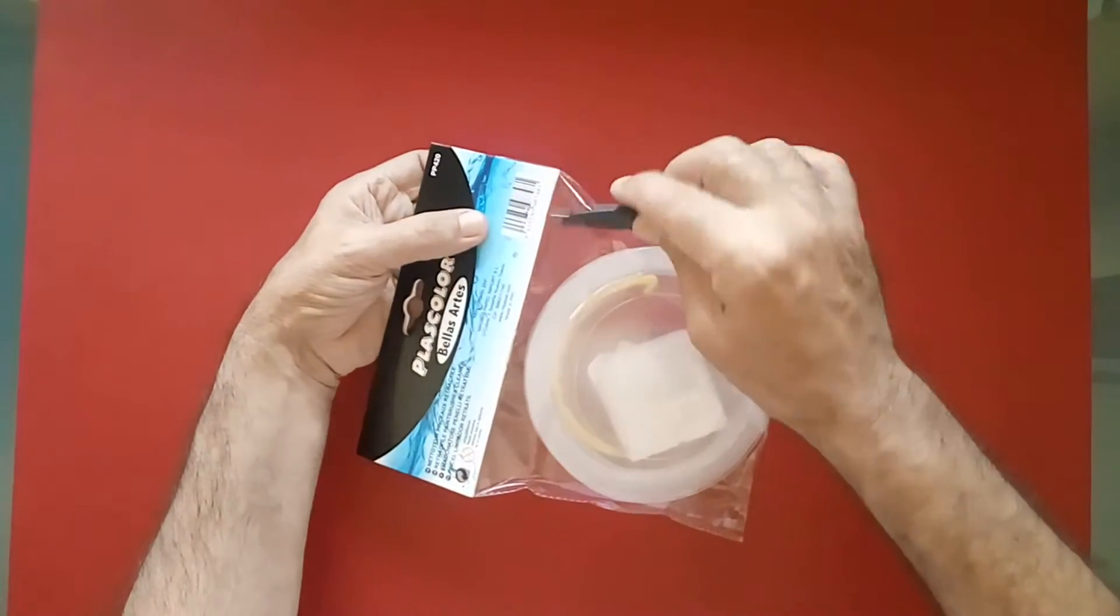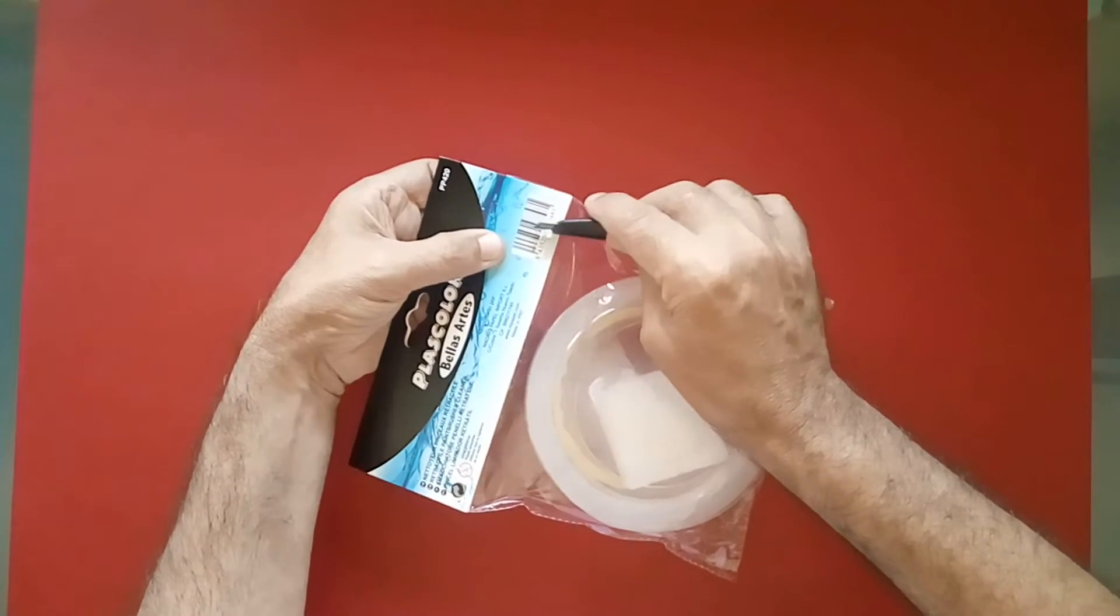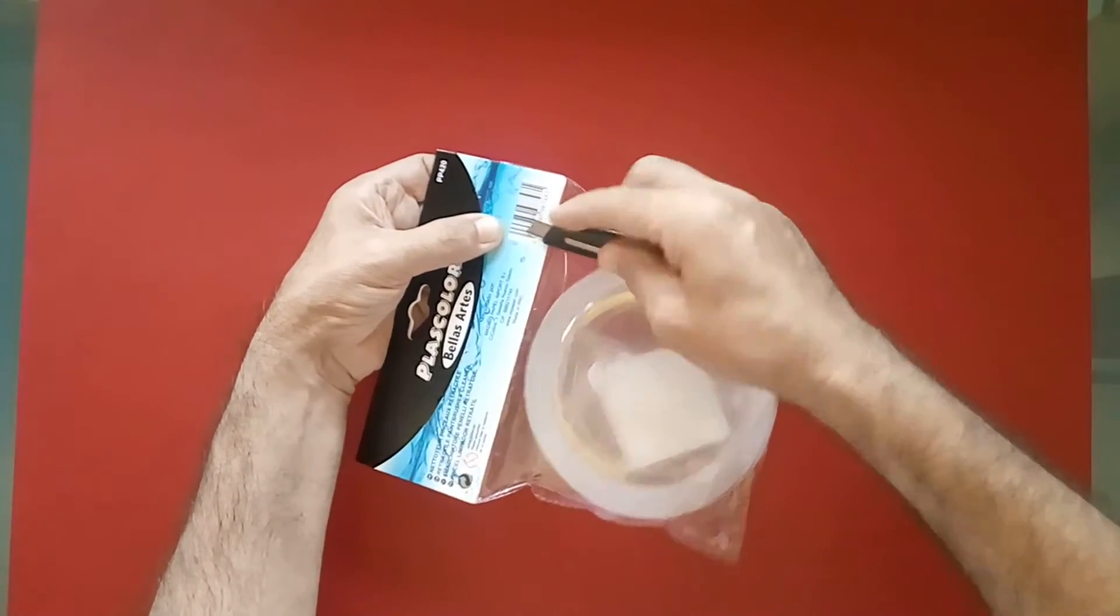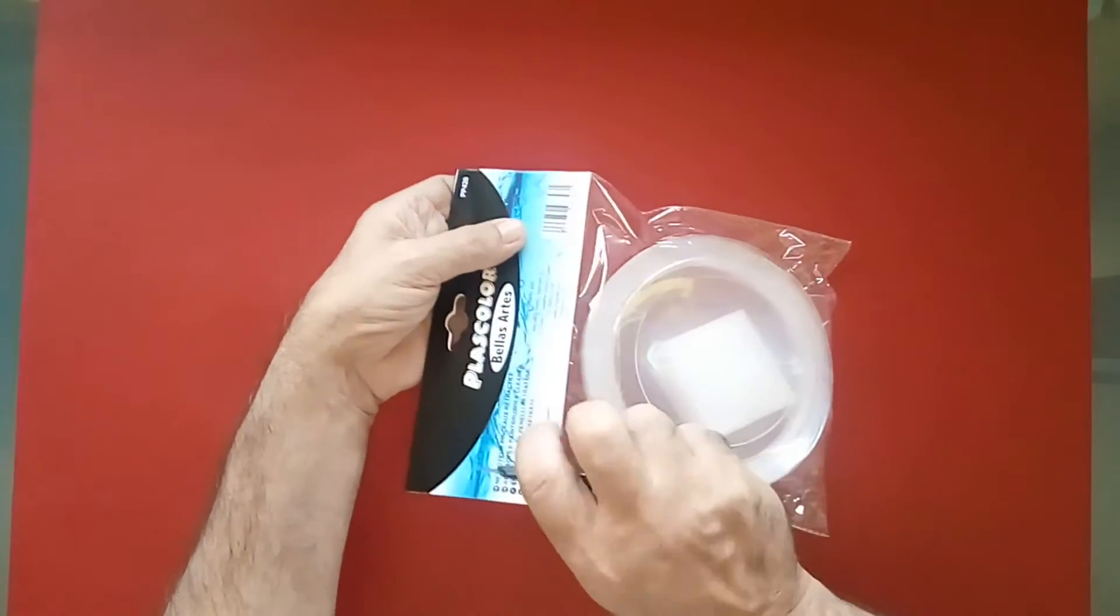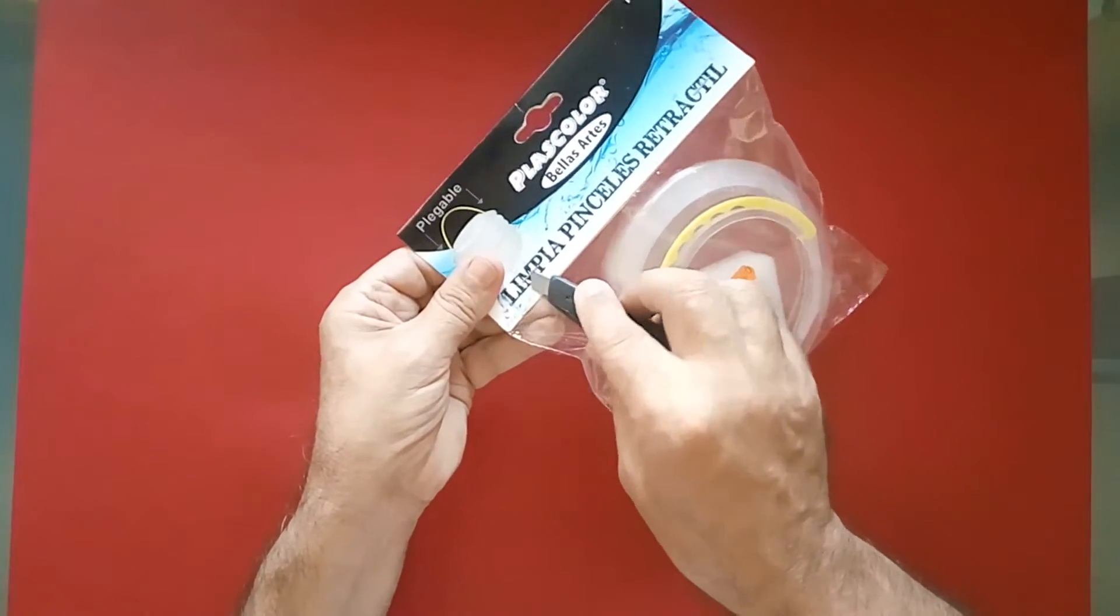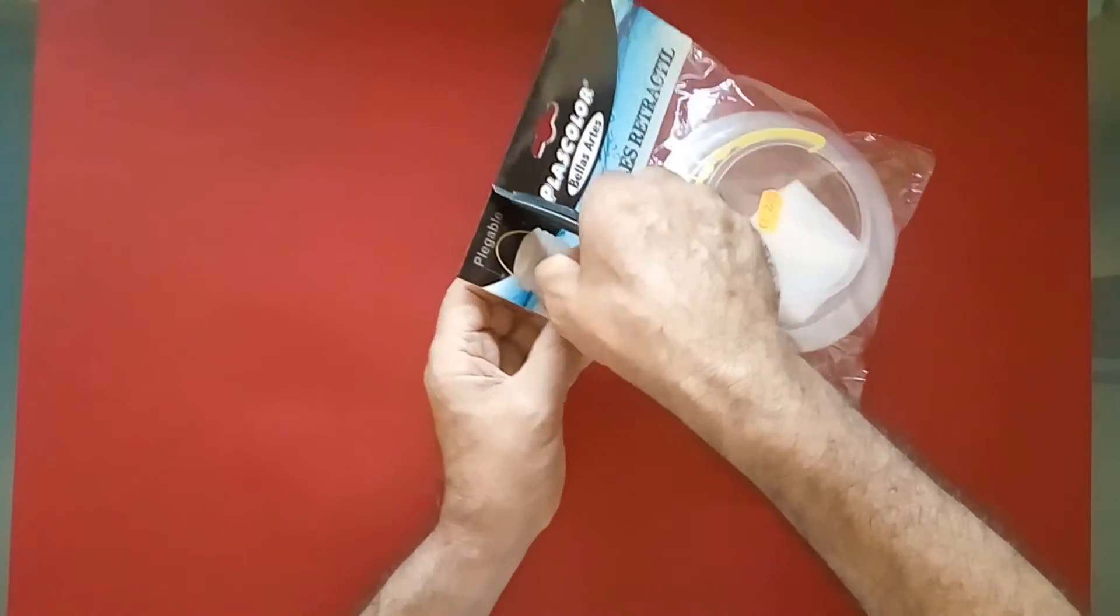Entonces viene muy bien si salimos a pintar al exterior porque podemos colgarlo de nuestro caballete y no hace falta que tengamos una mesa o cualquier otra cosa para poner nuestro recipiente de agua.